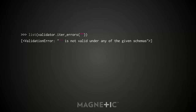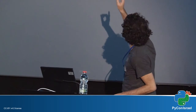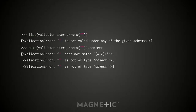Using iter_errors gives one error — the oneOf failed. But we can look at the context attribute, which tells us for each branch in the oneOf why it couldn't be satisfied. There were three schemas in the array, so there are three errors in context — one per schema. The first says the empty string doesn't match [A-Z]+, and the other two say it's not an object. So you get one context error per branch of your higher-order validator.